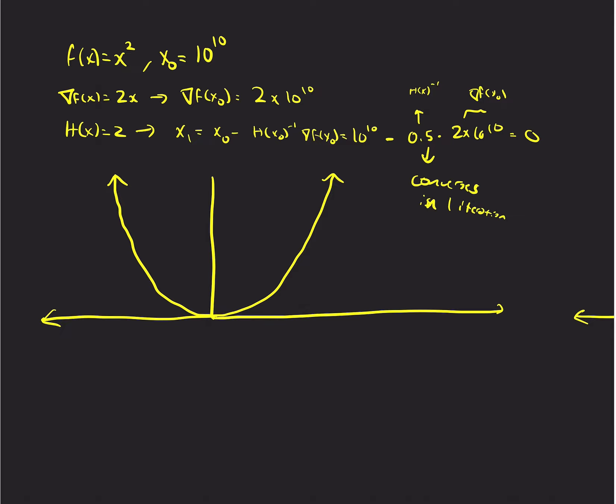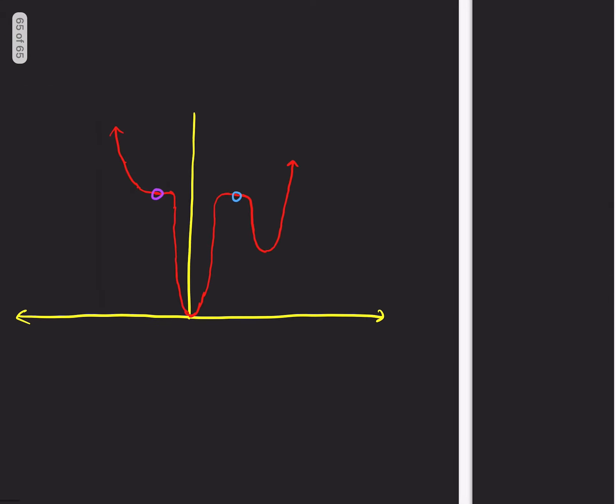When you're far away, you want gradient descent, because Newton will be, could be way off. And here's an example where Newton will be way off.